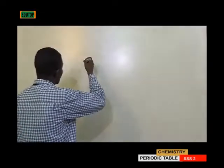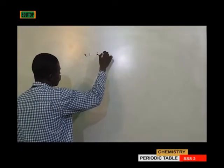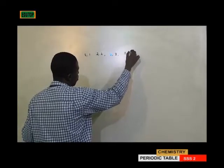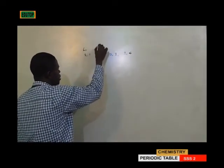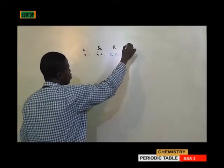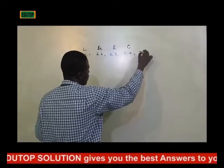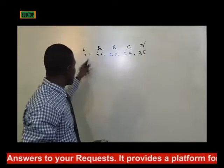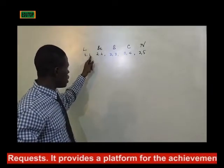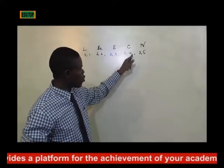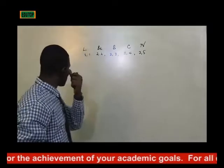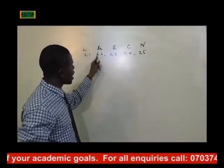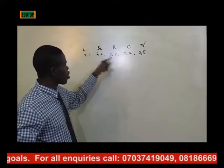Across the period, let's pick some elements in the same period: 2-1 is lithium, 2-2 is beryllium, 2-3 is boron, 2-4 is carbon, and 2-5 is nitrogen. As you move across the period, one electron is added each time. Since electrons are a function of protons, as you add electrons you are also adding protons.